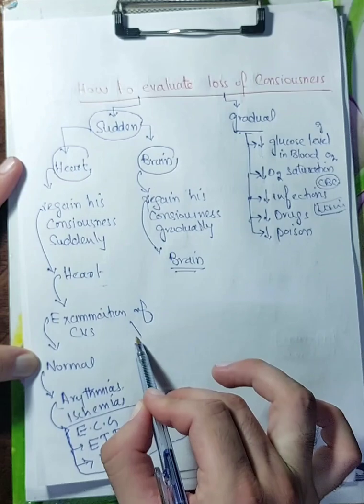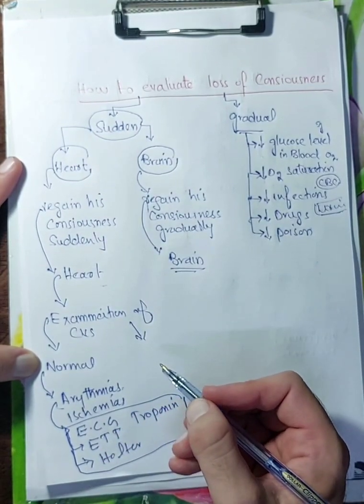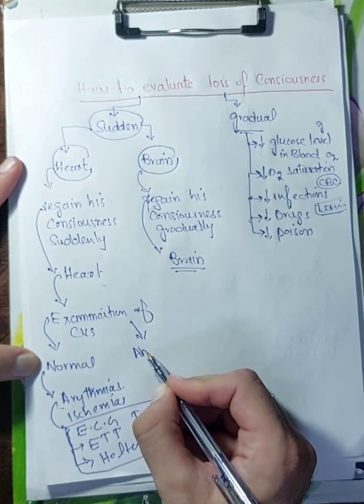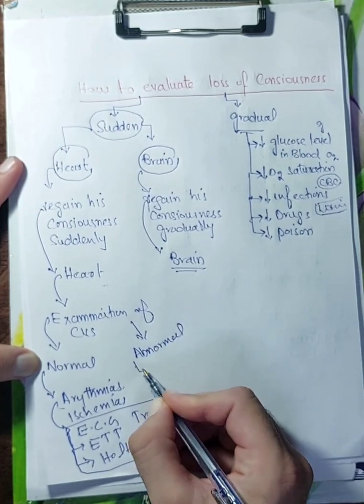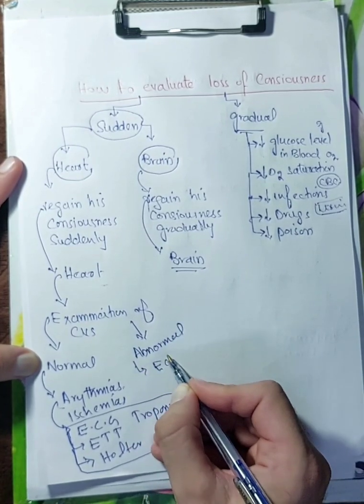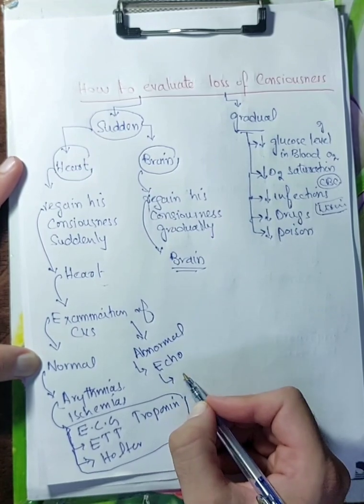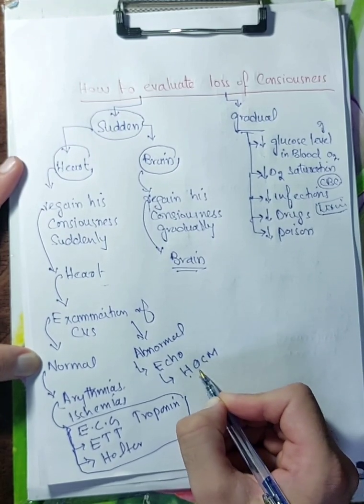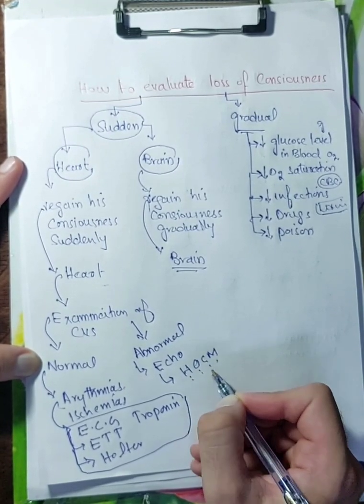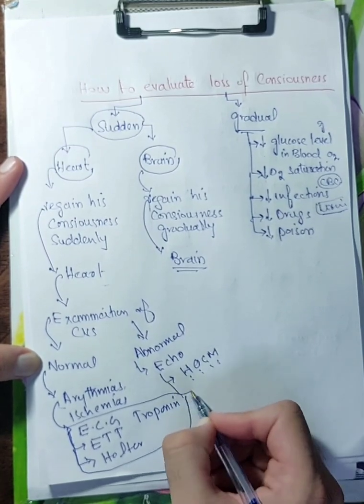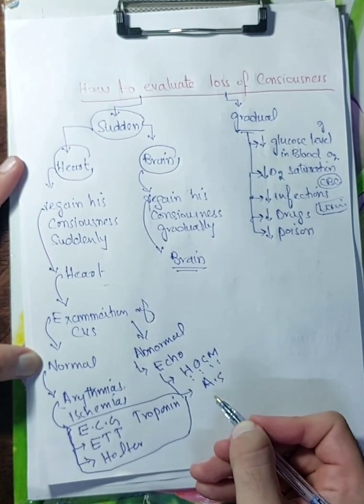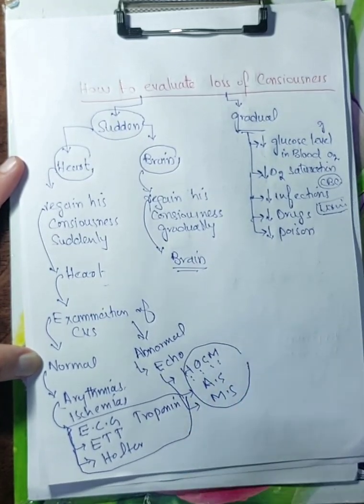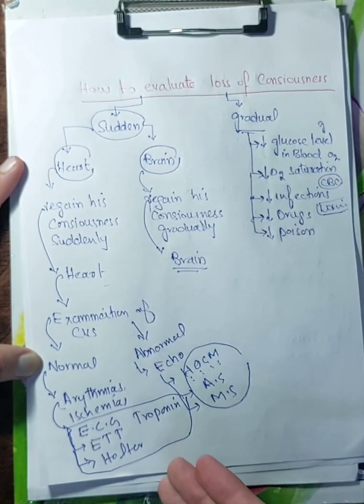If examination is abnormal of the heart, you found some sort of heart sound which is not normal, you are not able to diagnose it. If the examination is abnormal, you will do echocardiogram to rule out HOCM, hypertrophic obstructive cardiomyopathy, to rule out aortic stenosis, I will explain it later, to rule out mitral stenosis. These are the causes which lead to sudden loss of consciousness in the heart.